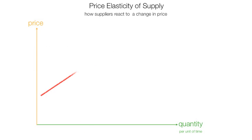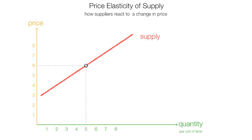I am going to redo the whole thing and put some numbers in. There is a supply curve, and I will put numbers in for prices and quantity. At a price of 6, the quantity supplied is 5. At every price level, there is an associated quantity. If prices rise from 6 up to 8, we move up the supply curve. Quantity supplied is 8.